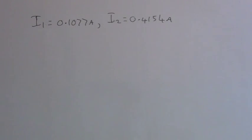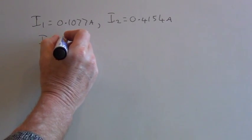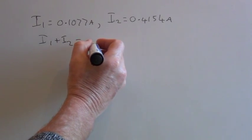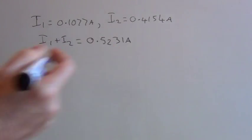So here I have the value for I1 and I2. Now the current flowing through the 15 ohm resistor is I1 plus I2, which equals 0.5231 amps.